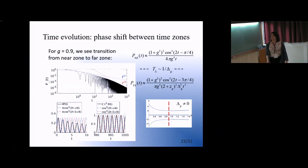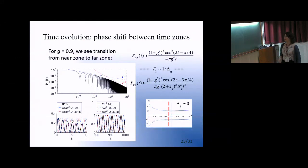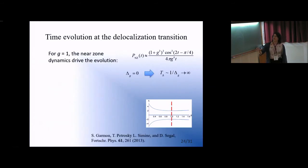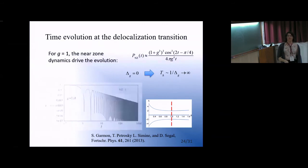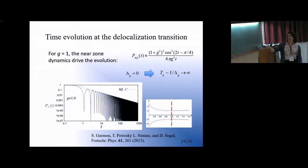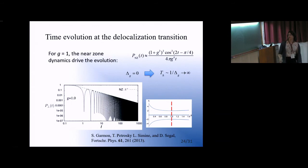For the g = 1 case, we're directly at the localization transition. The gap Δg vanishes and the time scale t_Δ diverges, so we have only the near-zone dynamics even asymptotically. More details about the virtual state and its relation to the non-exponential dynamics are in the paper.